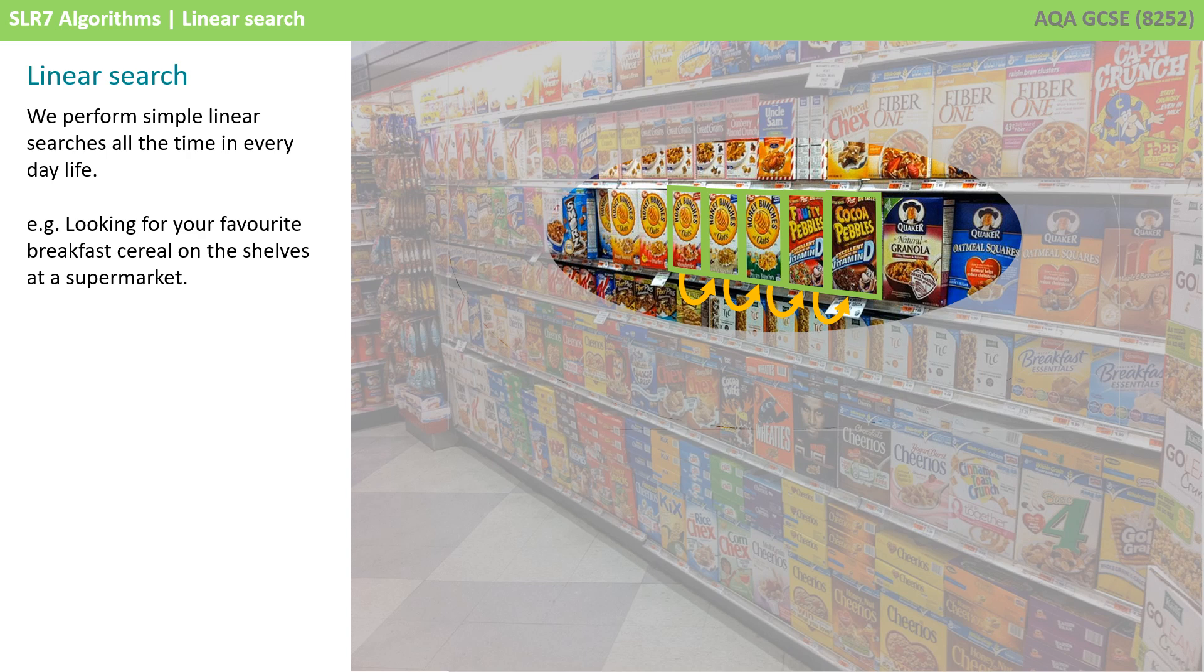We can apply a linear search to a whole variety of contexts. One might be looking for a particular box of cereal on a shelf in a supermarket. We could go through each box one at a time until they find the one we're looking for. We then take the box to the checkout and the computer will scan the barcode.